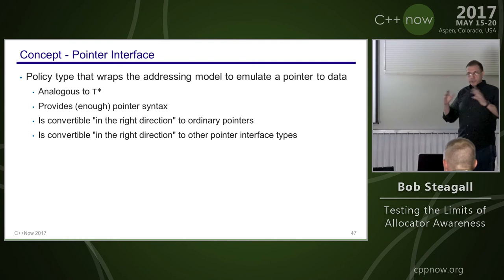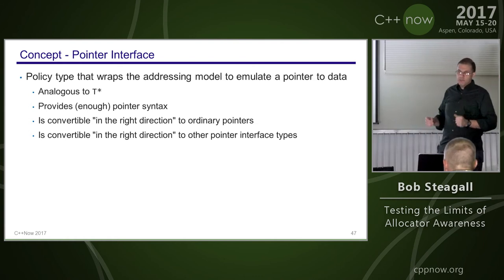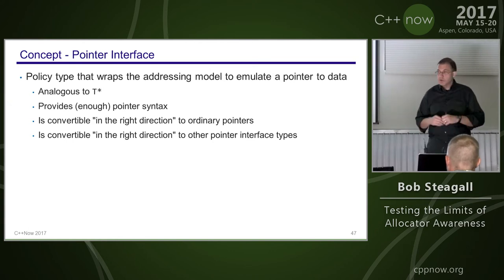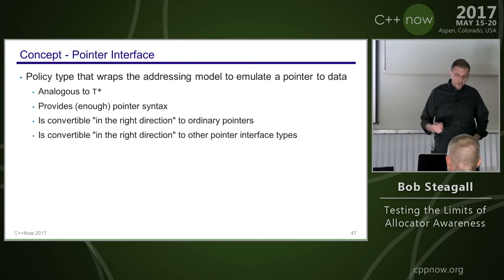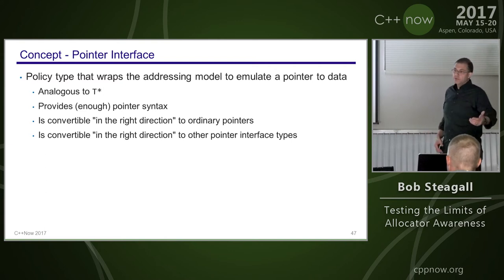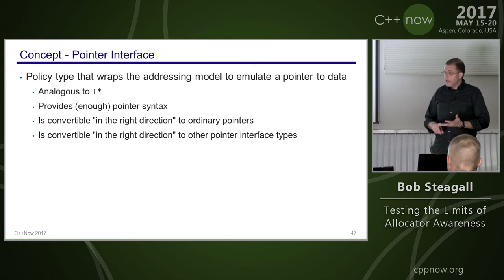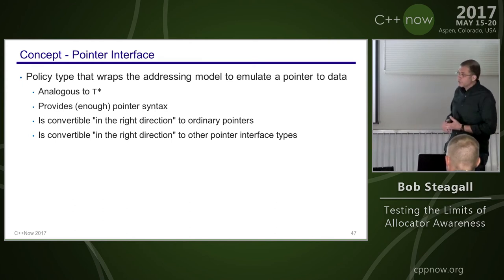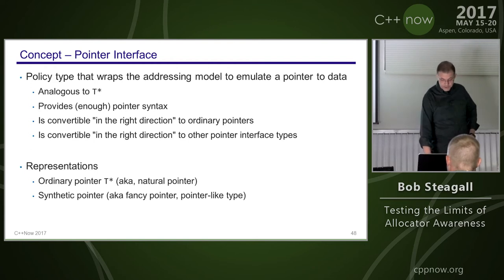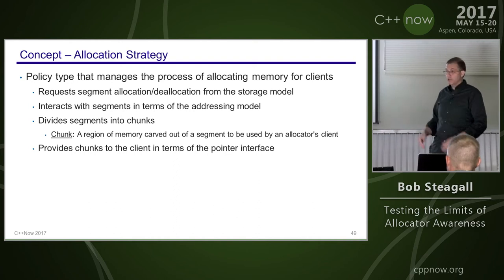To use raw memory we need a pointer interface — a policy type that wraps the addressing model to emulate a pointer, analogous to T*. It provides enough pointer syntax for containers to do their job, is convertible in the right direction to ordinary pointers (derived to base, adding CV qualifiers), and convertible to other pointer interface types. It can be represented by T* or by a synthetic pointer exhibiting the right set of properties — behaving as closely to a natural pointer as possible.